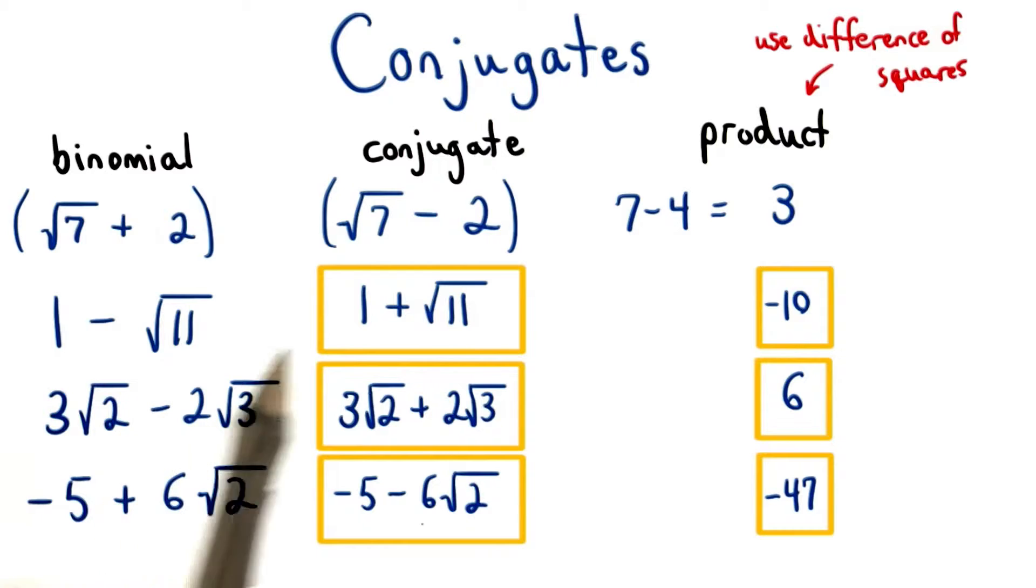So the conjugate of 1 minus root 11 is 1 plus root 11. Here we change the subtraction sign to a positive, and here we change the positive sign to a negative.